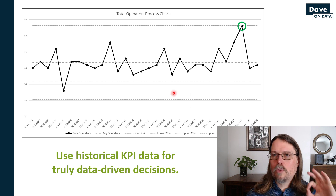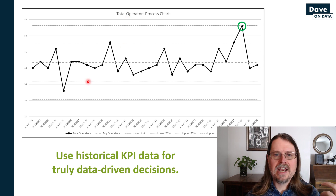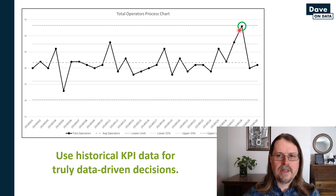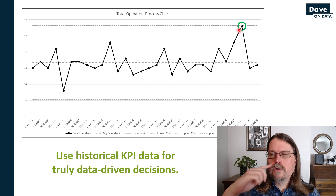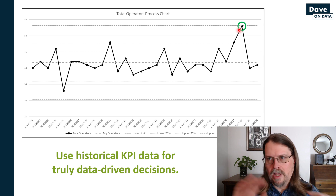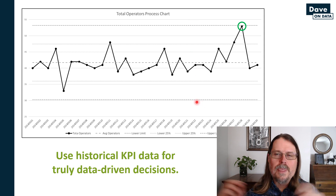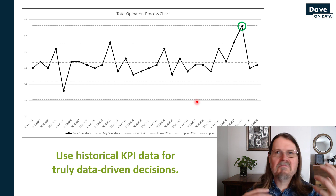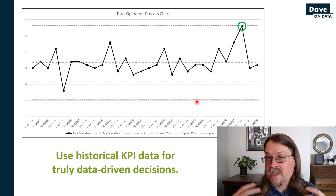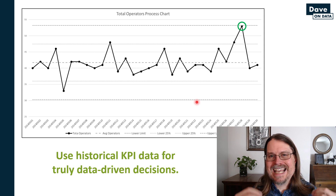Here's a new visualization — similar to the last one, it's a running record, a line chart showing one measurement: total number of operators by day. The key difference from the previous chart is these dashed lines. These dashed lines can be thought of as data analytics guardrails. These guardrails are the secret sauce of this technique for arriving at truly data-driven decision-making.